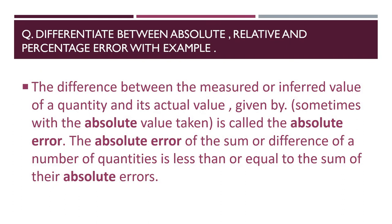The question is: what is the difference between absolute, relative, and percentage error, with examples? The difference between the measured or inferred value of a quantity and its actual value — sometimes with absolute value taken — is called absolute error. The sum or difference of a number of quantities is less than or equal to the sum of the absolute errors.